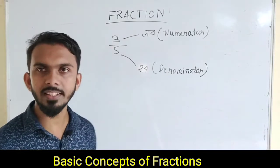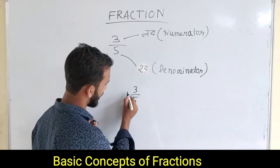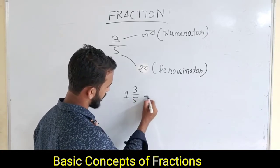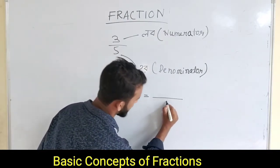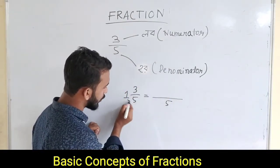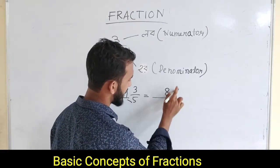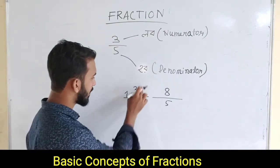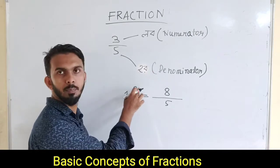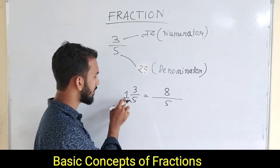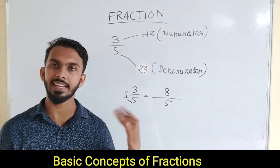And mixed fraction — that is a mixed fraction. Suppose 1 and 3 by 5. Now we have to break it: 5 into 1 is 5, plus 3 is 8. That means 1 and 3 by 5 equals 8 by 5. That is how we convert a mixed fraction.